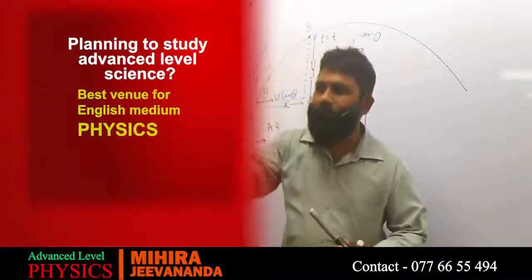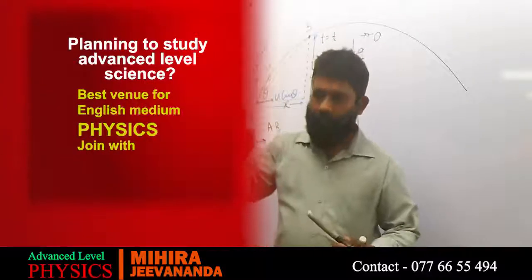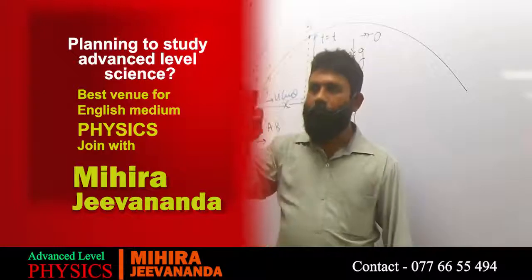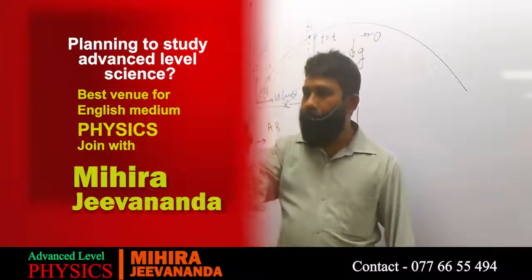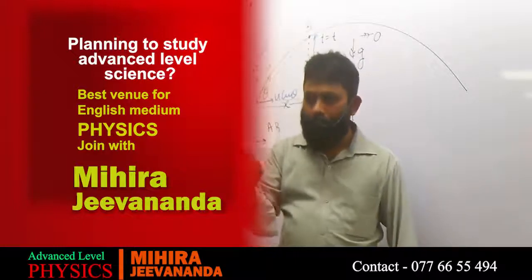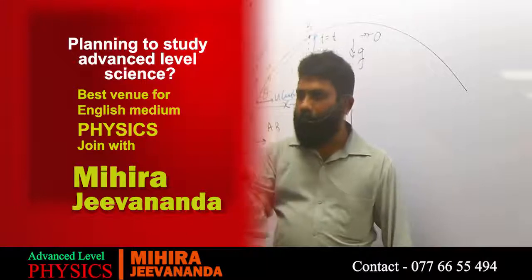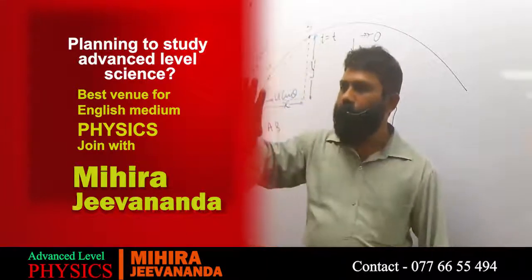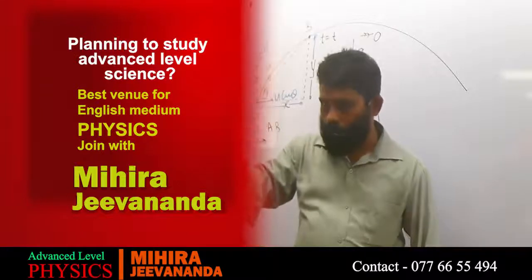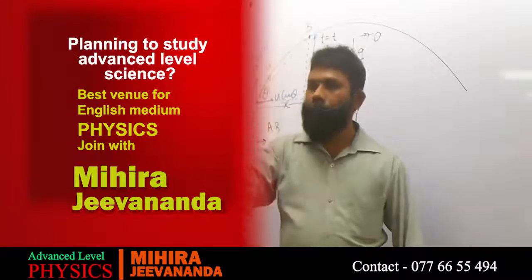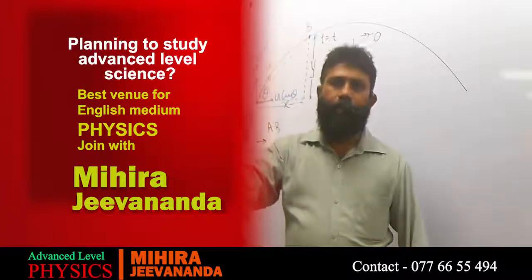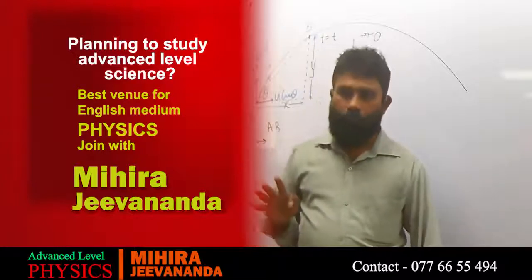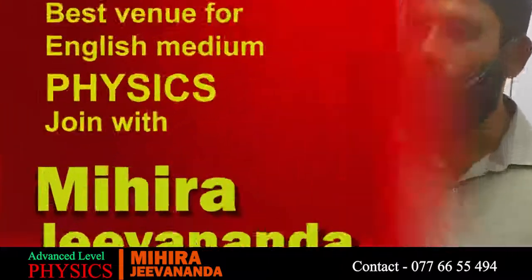I know three things — I have three knowns — so I can select the proper equation to calculate the displacement. I would take the equation without the final velocity, because I have the initial velocity and I have the acceleration.